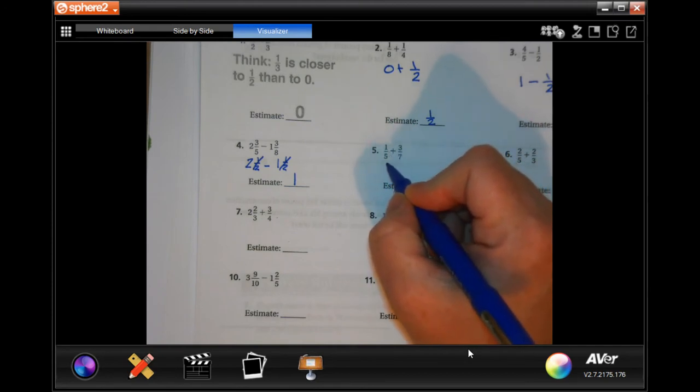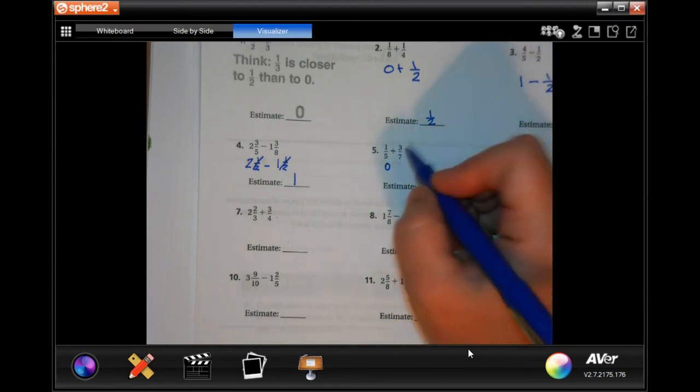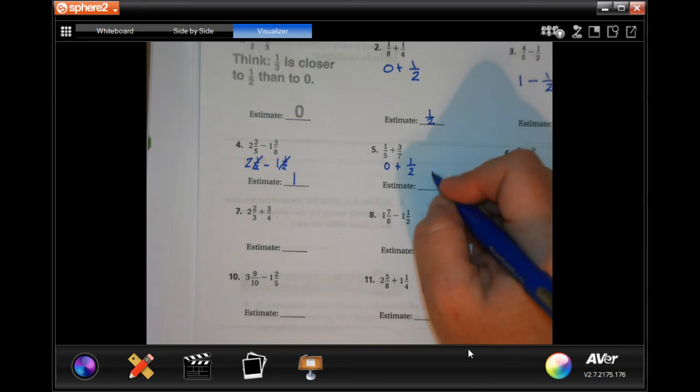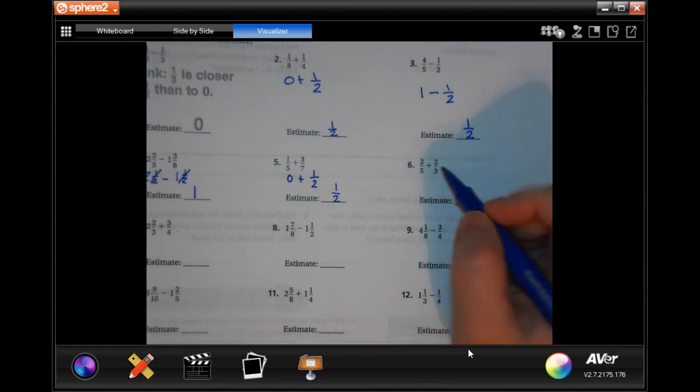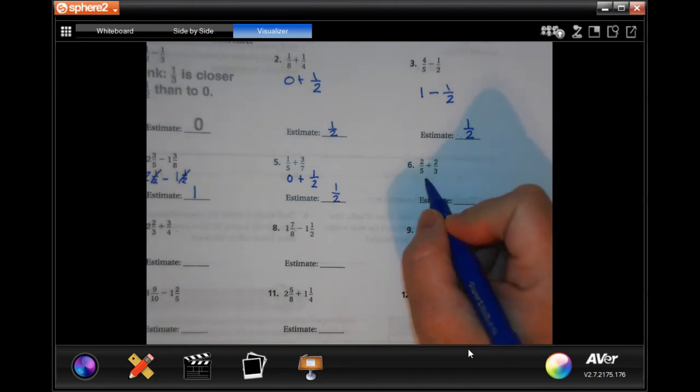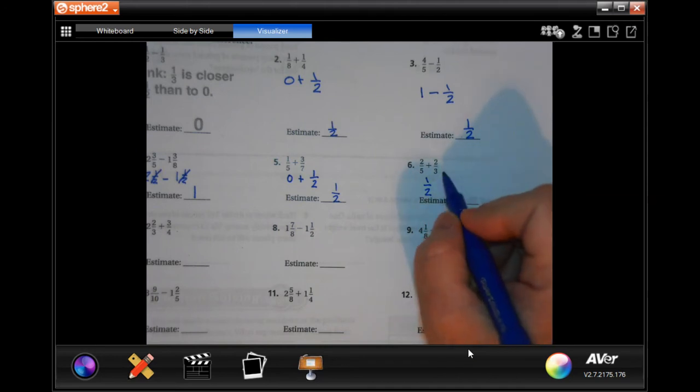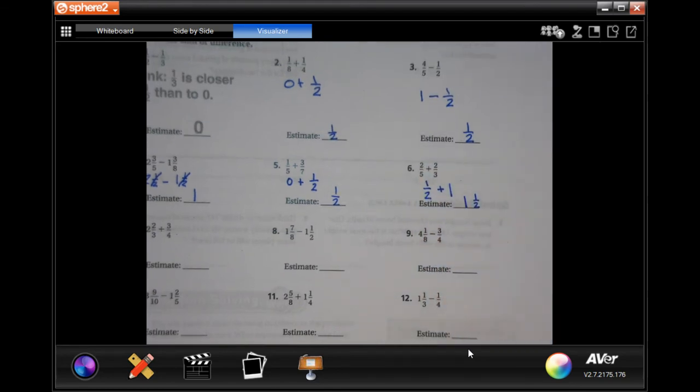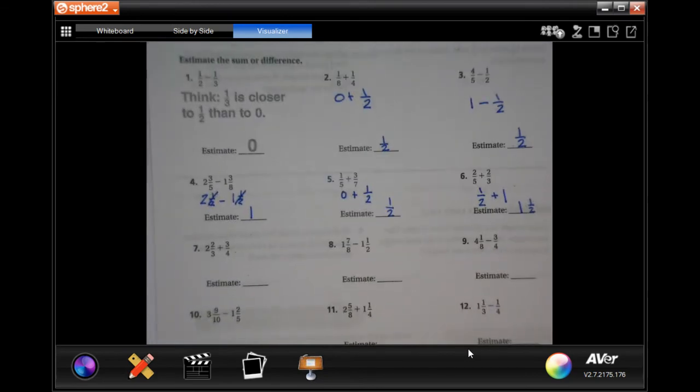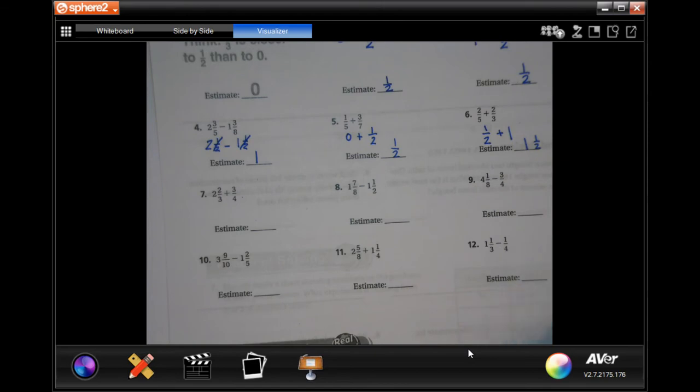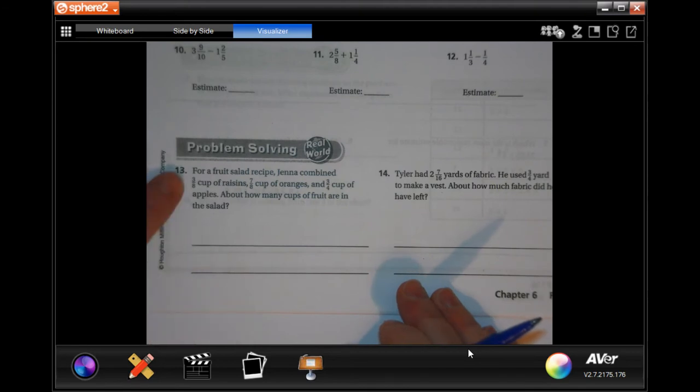All right, 1/5 is pretty close to 0, 1 isn't even close to half of 5, and 3/7 is about a half, so your estimate would be 1 and a half. 2/5, that's about half, and 2 over 3 is about 1, so 1 and a half. Make sure you're paying attention to the signs because some are addition and some are subtraction. You guys can finish 7 through 12.